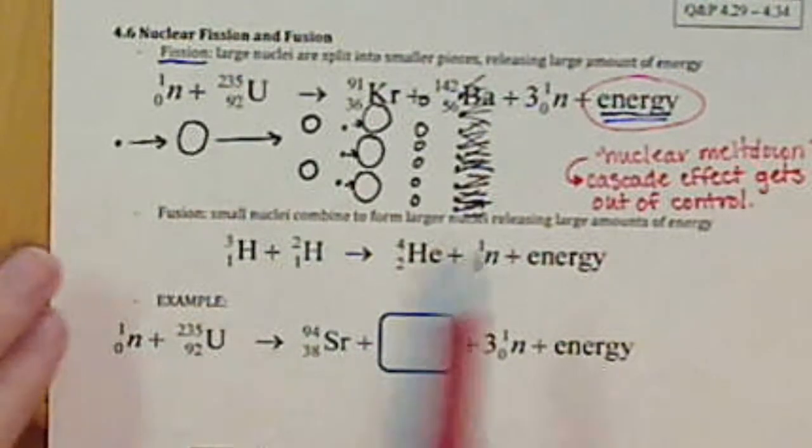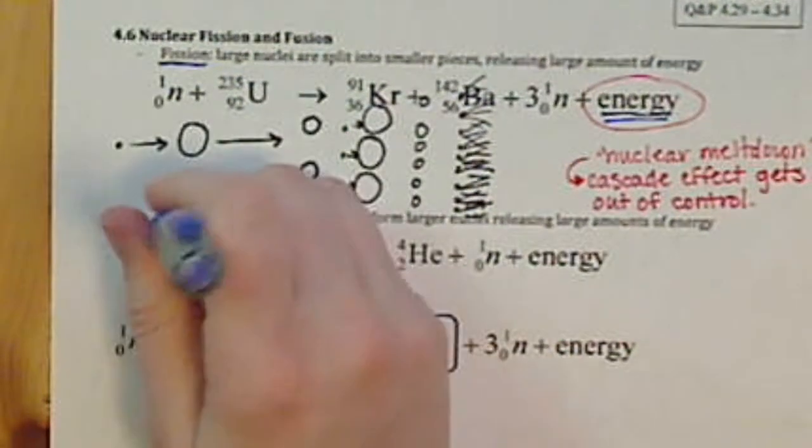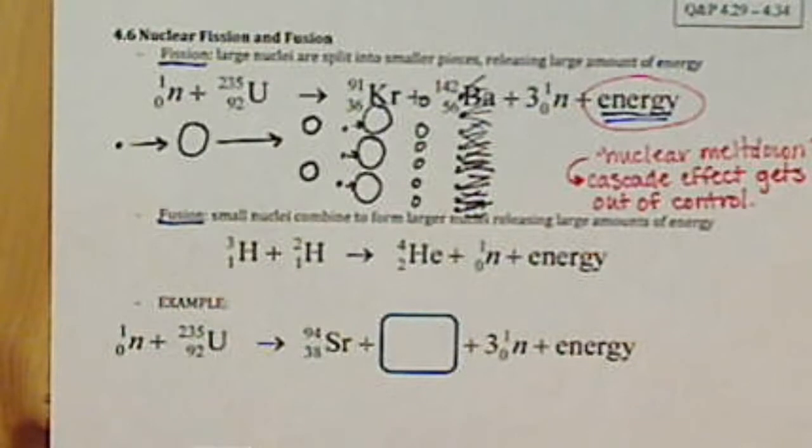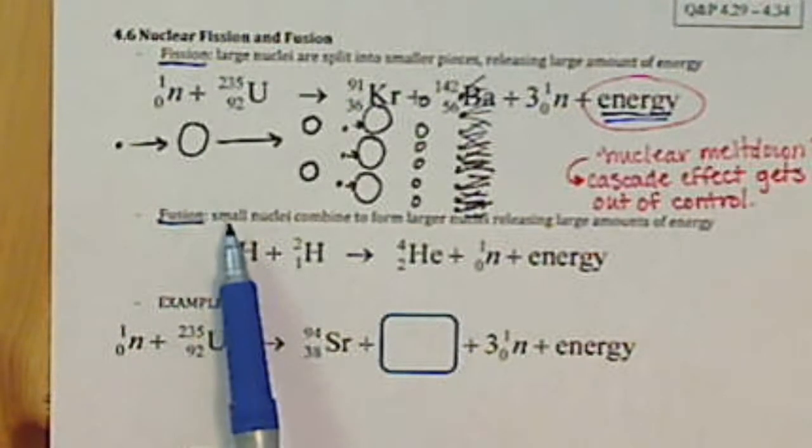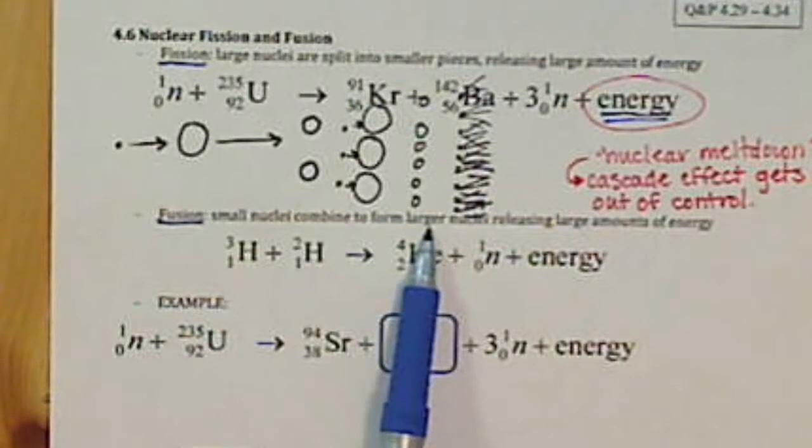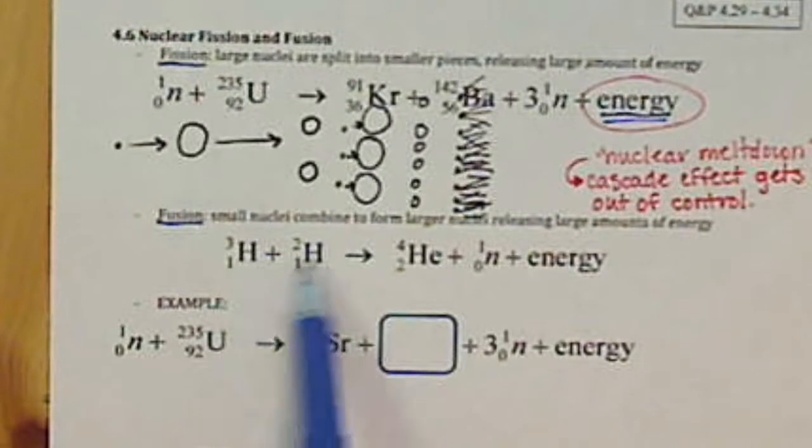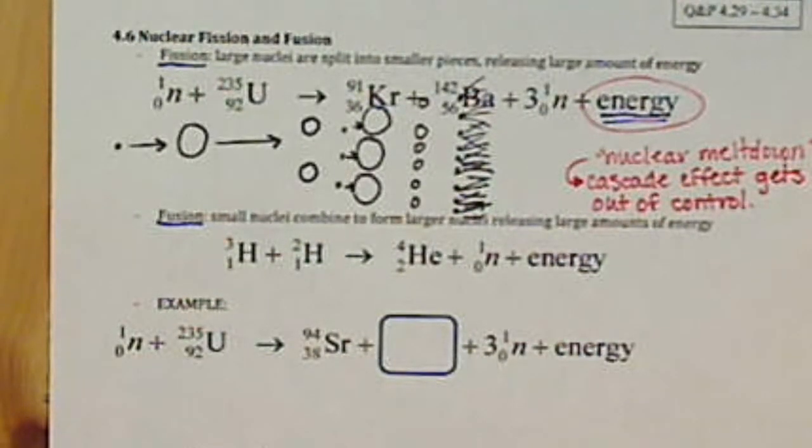All right, now fusion is kind of the opposite effect, and the opposite in that we're going to take two small nuclei to form a larger one. And we're not going to be dealing with really large elements. We're dealing usually with elements or isotopes of hydrogen.